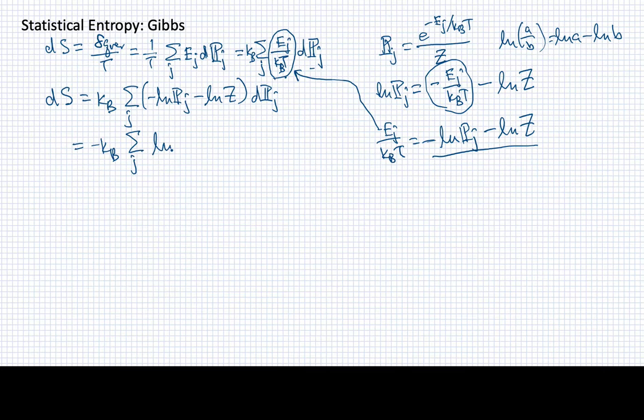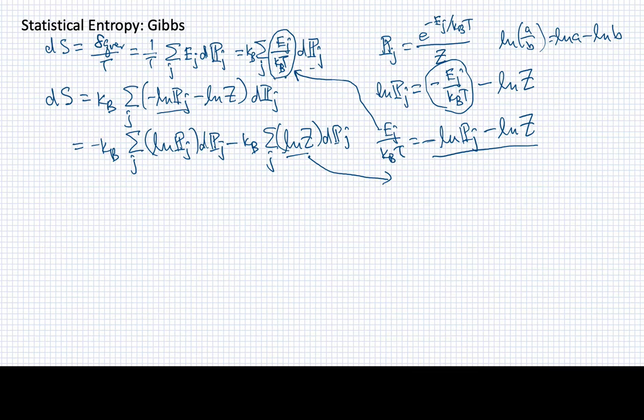So I'll have one sum that has log of pj times dpj, that's just from that term, and then I'll have another sum that will be log of z times dpj. But what does this second term look like? Well, this log of z doesn't depend on j, so I can bring it out front, so I'll end up having kb log of z times the sum over j of dpj. But what I've got here is really just the differential of the entire sum. In other words, this is really equal to kb log of z times the differential of this.